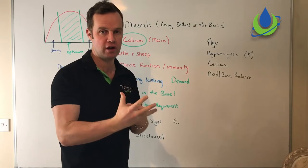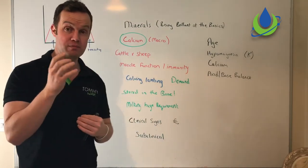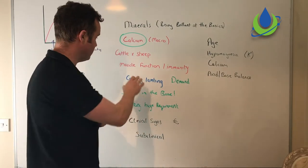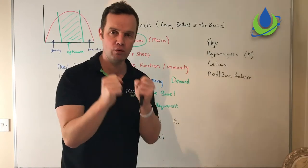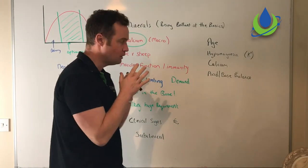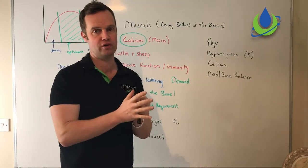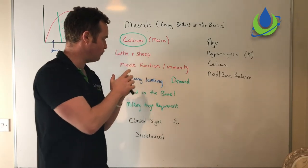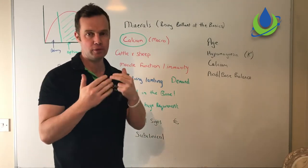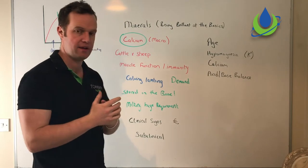She has very special mechanisms to do it, and I'll talk about that in a minute. What does calcium do? Key role in muscle function, key role in immunity, amongst other things. But they're the important functions. So at calving and coming up to lambing time, there's a huge demand, particularly in cows.